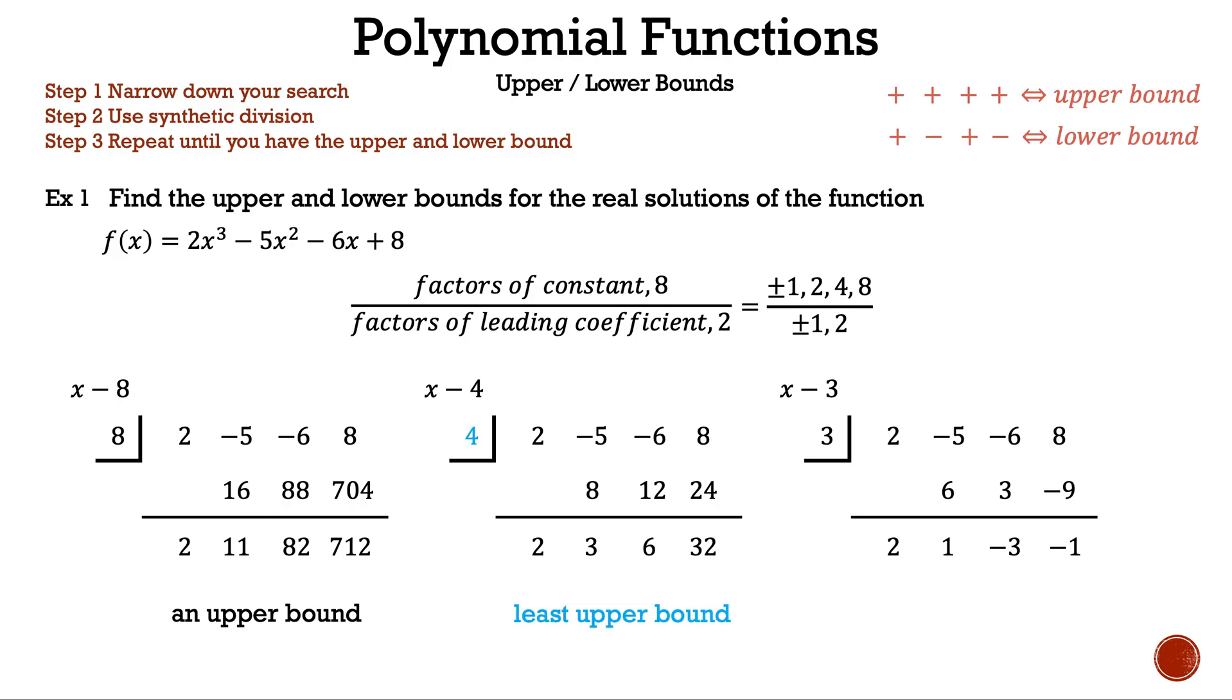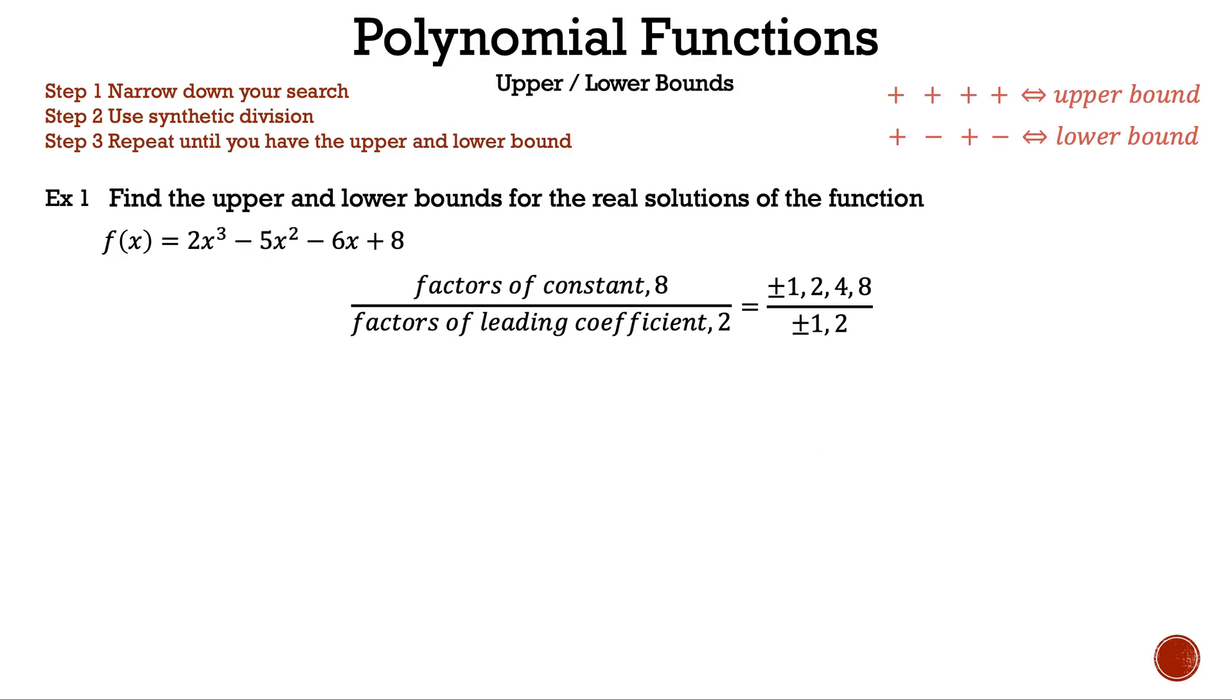Now that we've found the least upper bound, let's move on to the lower bound. This time we're not going to pick -8 since it is not in the middle. Let's pick -1. Our result is not a lower bound since the numbers on bottom are not alternating positive, negative, since we have 2, -6, 0, 8.